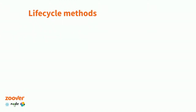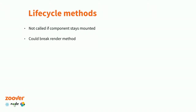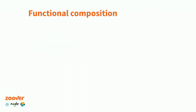Another thing that is really hard to get right — and it makes sense — is lifecycle methods. You have lifecycle methods like componentWillMount, componentDidMount, and the constructor. They are obviously not called if the component stays mounted. So if you change anything in a render method that depends on changes in the constructor or componentWillMount or componentDidMount, that could break your render method because the lifecycle methods are never called. The only way out is to refresh — there's no way around it. If you want to keep local state, you won't have the updates in your lifecycle methods.